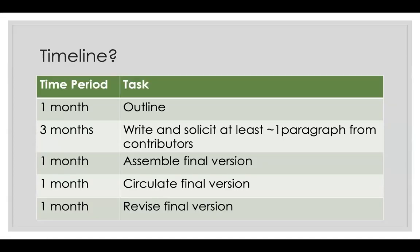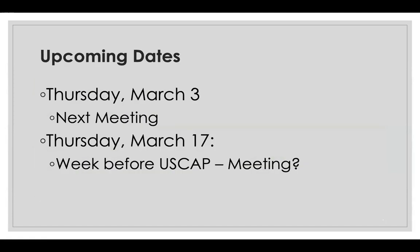With seven months, we can spend one month on the outline, three months on writing and soliciting contributor paragraphs, one month assembling the final version, one month circulating it, and one month revising based on that circulation.